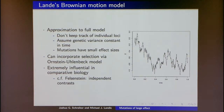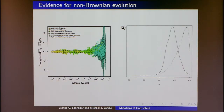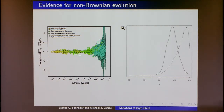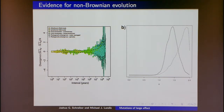Felsenstein's independent contrasts models said that when looking at continuous traits in comparative data, you need a model of trait evolution or you'll make wrong inferences. But we're starting to see evidence for non-Brownian evolution from comparative data. This figure from Uyeda and colleagues shows on the x-axis the phylogenetic distance between two species, and on the y-axis the phenotypic difference. They argued there's almost no change for about a million years, then suddenly an explosion of change — what they called a blunderbuss pattern. They interpreted this as waiting for macroevolutionary changes, then a big jump-like burst.